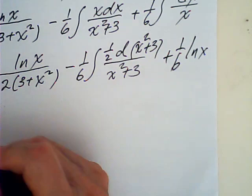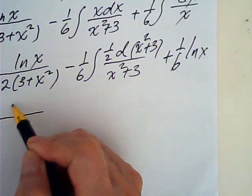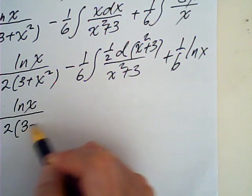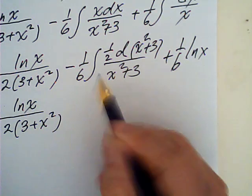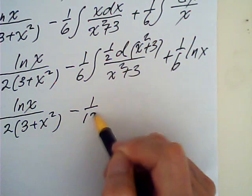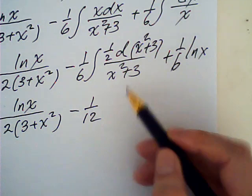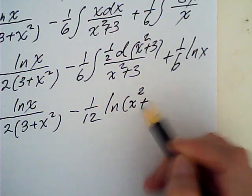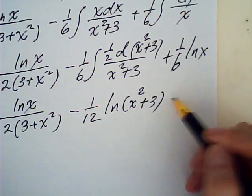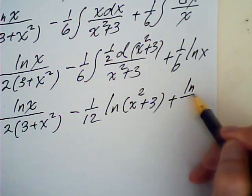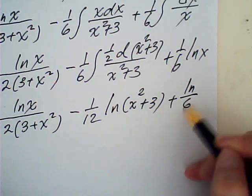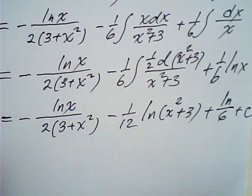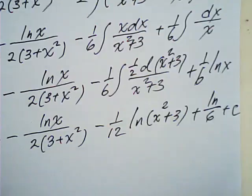Then finally we have log x over 2 times 3 plus x squared, which would be minus one twelfth log of x squared plus 3 plus log x over 6 plus C. That is the result for this integral.